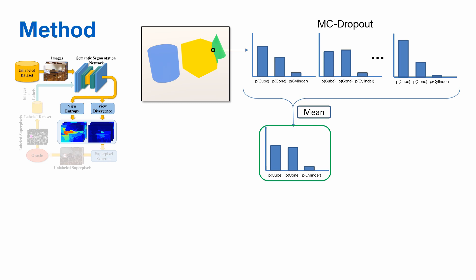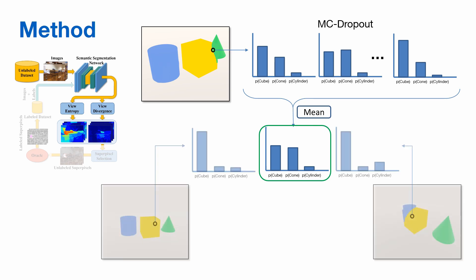To incorporate the uncertainty across views, we cross-project the prediction distributions of corresponding pixels from other views using the depth and pose. The entropy of this view-marginalized distribution gives us the view entropy score.